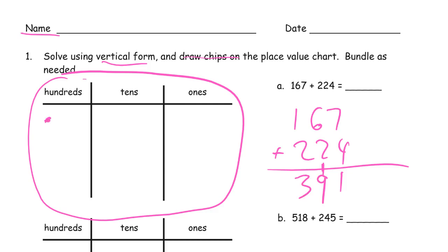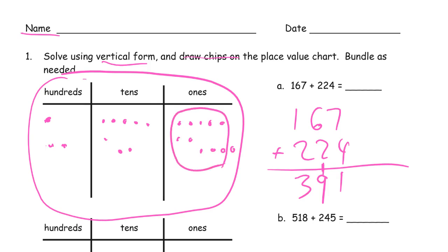So our answer is 167 and 224. You can see that's 10 ones, and then I'm going to have one left behind. All our tens are going to add up — 1, 2, 3, 4, 5, 6, 7, 8, 9. Nine tens and three hundreds, giving us 391.